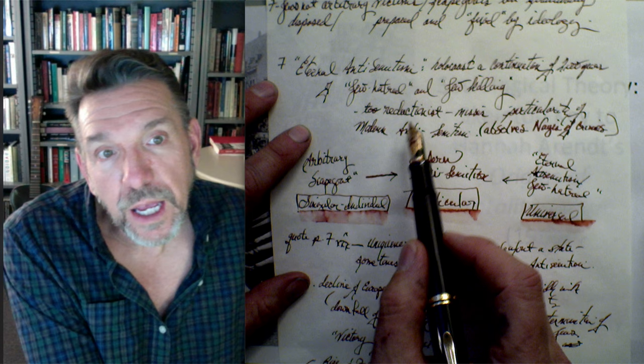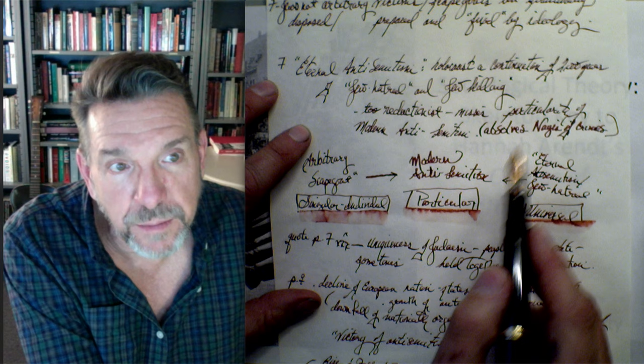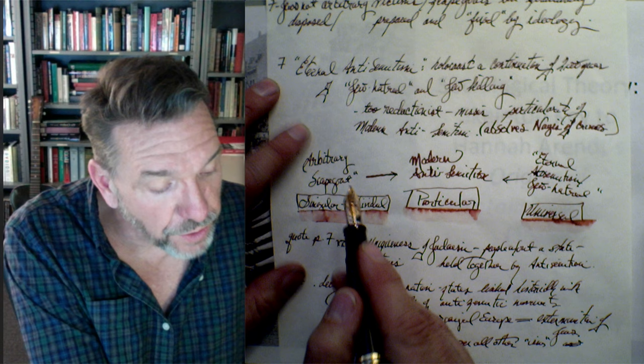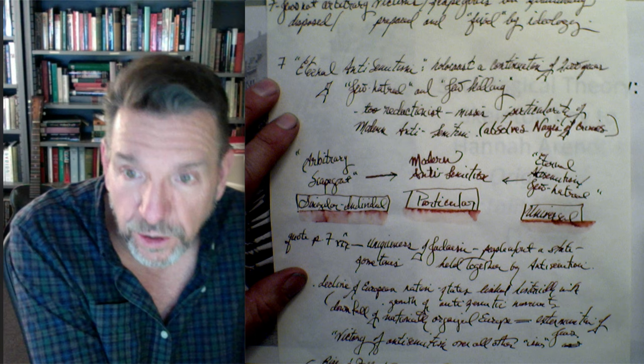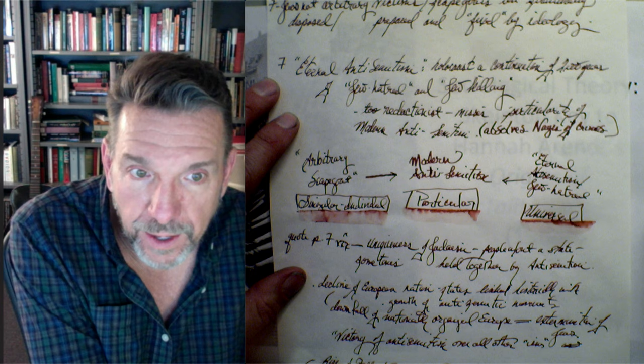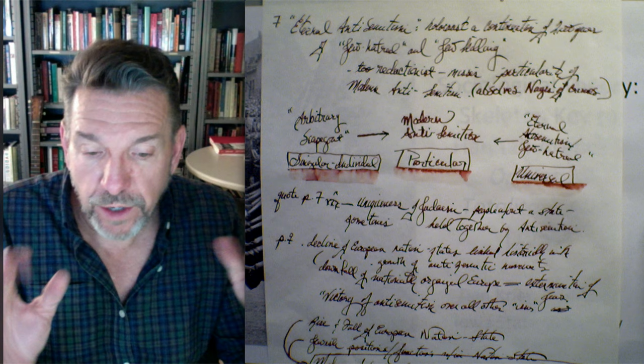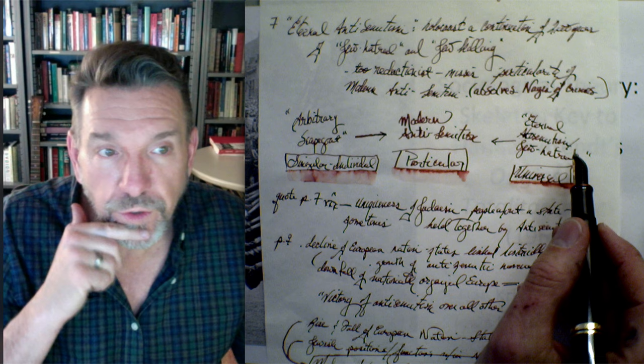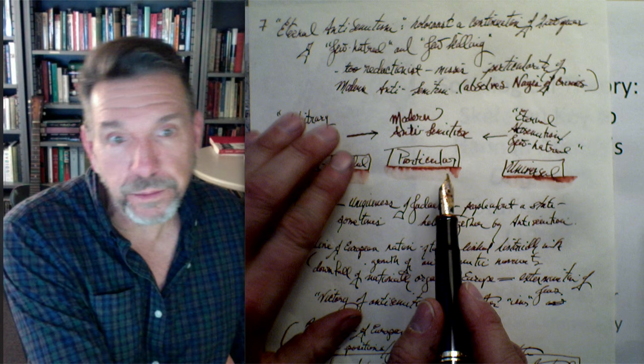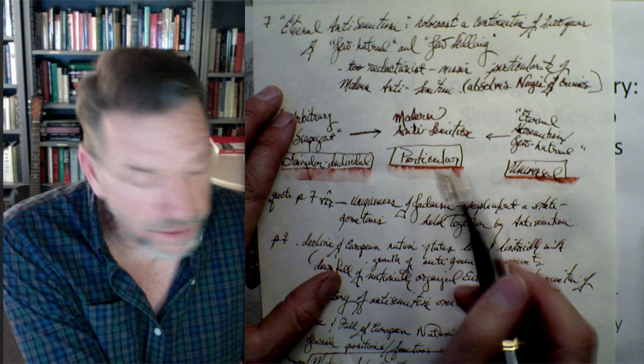Arendt argues the eternal-antisemitism thesis is too reductionistic — it misses the particularity of modern antisemitism, and she claims it actually absolves Nazis of their very specific crimes. It isn't that Jewish people are arbitrary scapegoats, nor that the Holocaust was a continuation of 2,000 years of anti-Jewish activity. Instead, she claims there was something very particular about modern antisemitism. Her study is truly sociological: she's trying to understand the structure of particularity linking individual phenomena to the social universal.